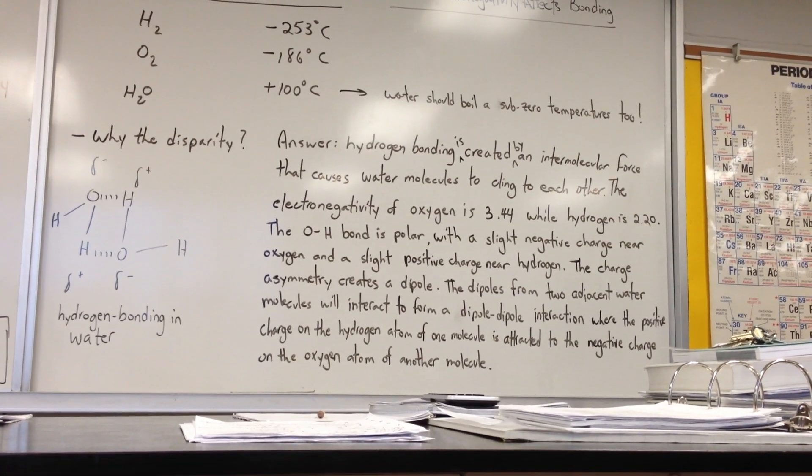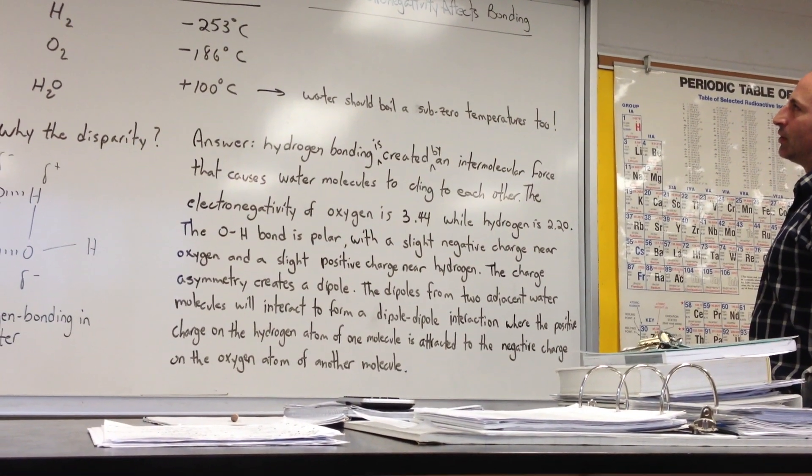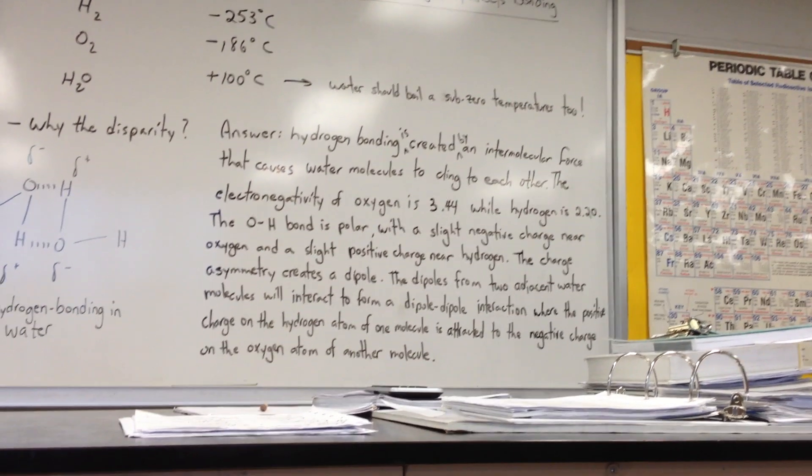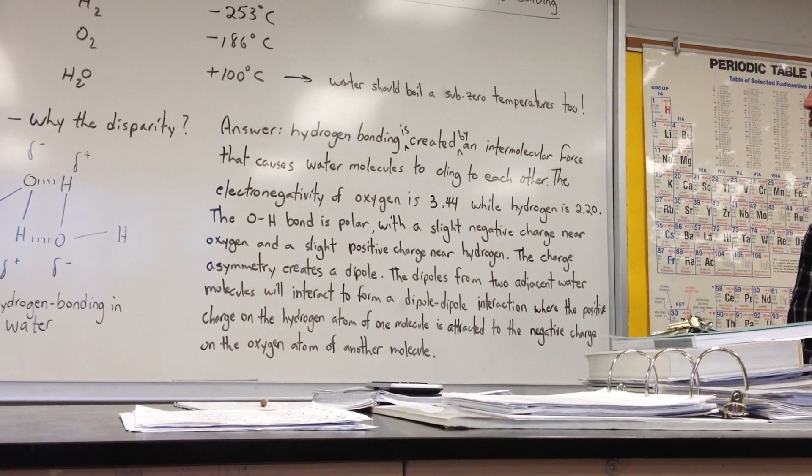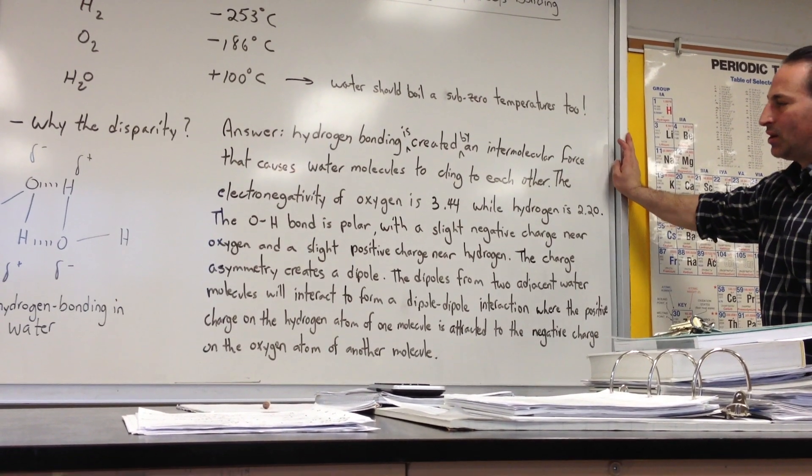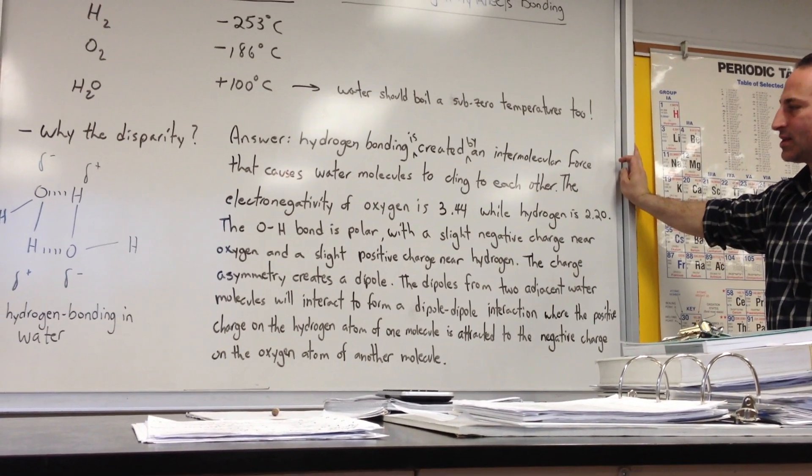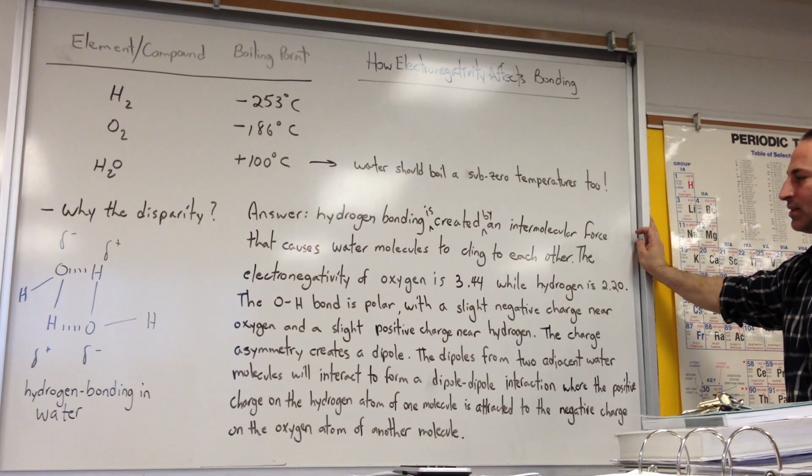So I'll read you the conclusion to this thought experiment. Hydrogen bonding is created by an intermolecular force that causes water molecules to cling to each other. The electronegativity of oxygen is 3.44, while hydrogen is 2.2. The O-H bond is polar with a slight negative charge near oxygen and a slight positive charge near hydrogen. The charge asymmetry creates a dipole.